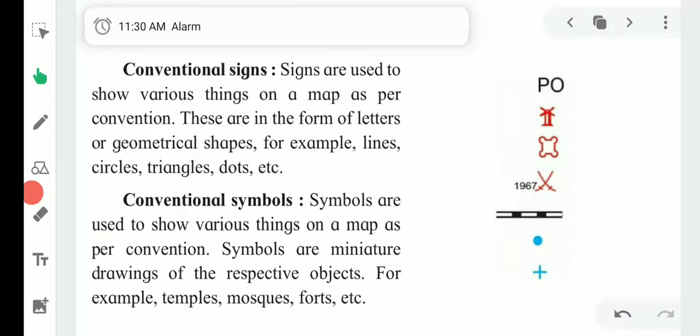Conventional signs are used to show various things on a map as per convention. These are in the form of letters or geometrical shapes, for example lines, circles, triangles, dots, etc. Conventional symbols are used to show various things on a map as per convention. Symbols are miniature drawings of the respective object. For example, temple, mosque, fort, etc.